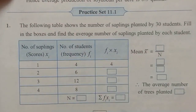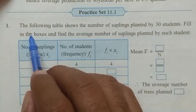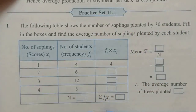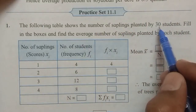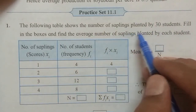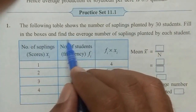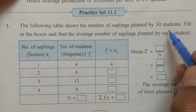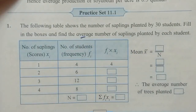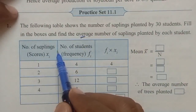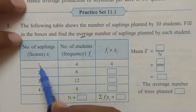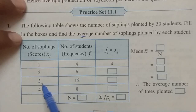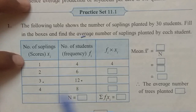Moving ahead — Practice Set 11.1. The following table shows the number of saplings planted by 30 students. Is table mein information diya hai. 30 students ne kuch plantation kiya tha, saplings lagaye hain. Feed in the boxes and find the average number of saplings planted by each student. 4 saplings — 8 students.